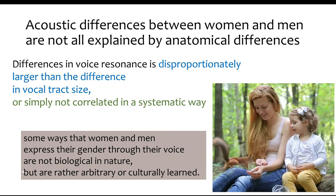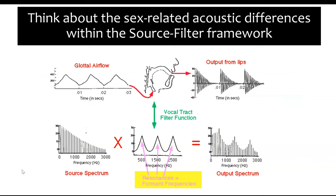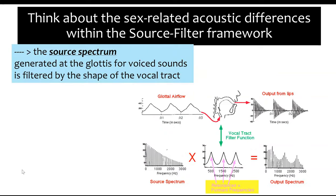We're building a story about how women and men express their gender through voice acoustics in ways that are not just tied to physical biology, but are rather arbitrary or culturally learned — for example, a child picking up speech patterns by spending time with an older woman, a mom, a sister, or an aunt. We'll base our discussion on the source-filter model of speech production, starting with the source spectrum, which is generated at the glottis where the vocal folds are and then filtered by the vocal tract.